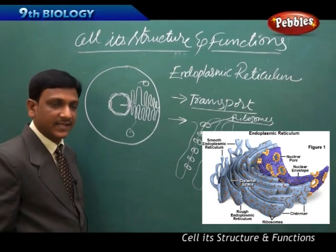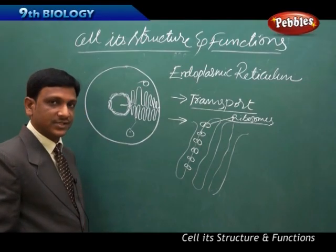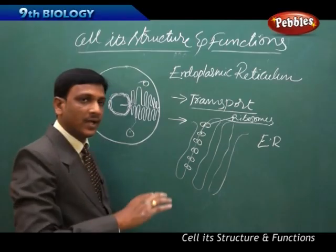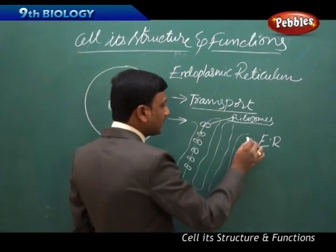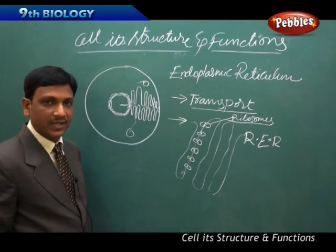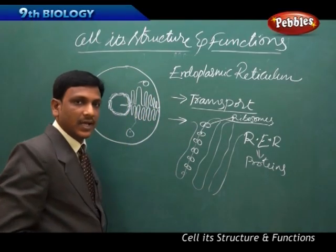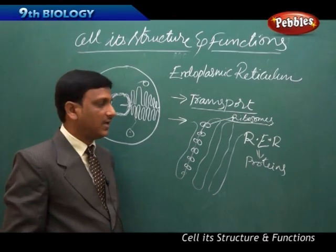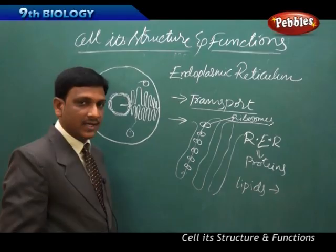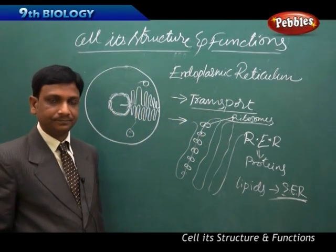Ribosomes are attached to the membranes of the endoplasmic reticulum. The endoplasmic reticulum that provides space for ribosomes to prepare proteins is called rough endoplasmic reticulum — it is rough because ribosomes are attached to its membranes. The endoplasmic reticulum also helps in the synthesis of another substance — lipids or fats — and these lipids are synthesized in the smooth endoplasmic reticulum, abbreviated as SER.